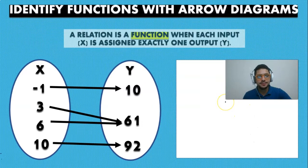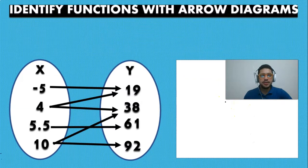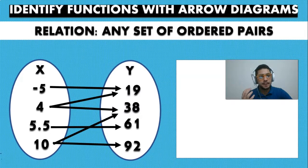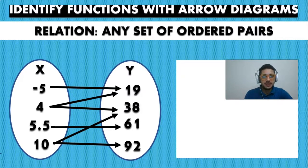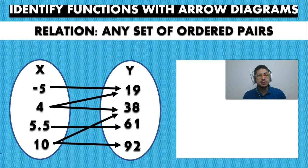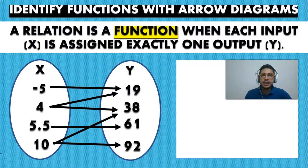Now let's take a look at another problem. Again, we have to check if it's a relation first — and yes, it is a relation because we have sets of pairs of data. We have: four maps to minus five, five point five maps to nineteen, four also maps to thirty-eight, ten maps to sixty-one, and ten also maps to ninety-two. So we have pairs, meaning we are dealing with a relation.